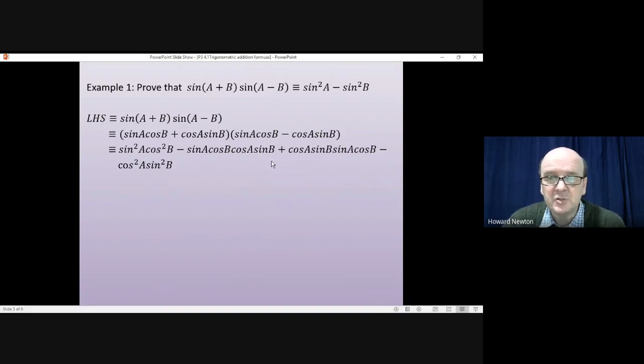If you look at these two large terms in the middle, all of them have exactly the same four things in them. They all have sin A, sin B, cos A and cos B in them. So they do just cancel each other out. And we're left with sin²A cos²B take away cos²A sin²B. At this point, I think I would glance at what we're trying to get. We're trying to get sin²A minus sin²B. There are no cosines on the right-hand side, which suggests we want to get rid of the cosines from what we have here.